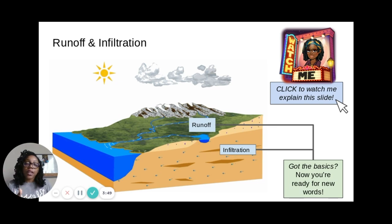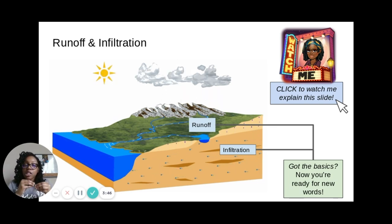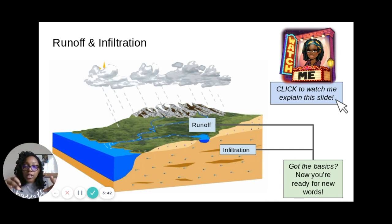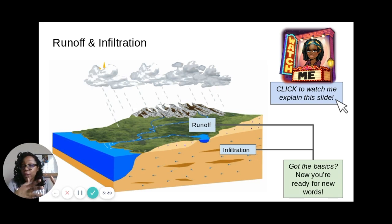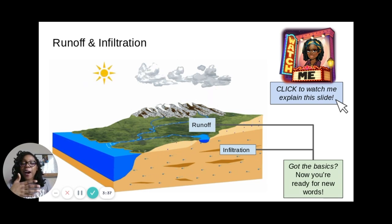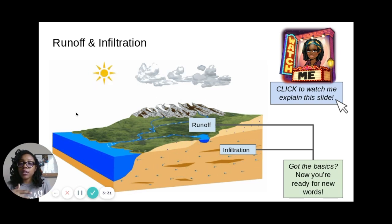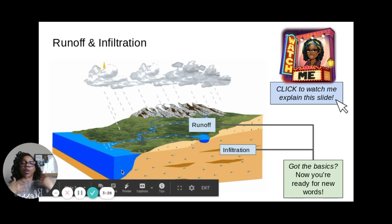The other step is called infiltration. Infiltration is when groundwater, after it rains, soaks into the ground and literally infiltrates the ground. And just like you see in this gif, the water starts to percolate all the way down to the body of water shown over here.